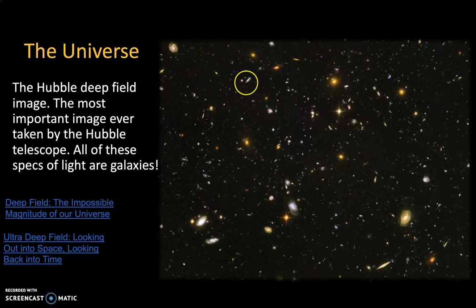Pretty much every single dot, every single speck of light that you see here, I think there's something like 10,000 specks of light here. And the vast, vast majority of those specks and dots of light that you see is an entire galaxy. Thousands upon thousands of galaxies just in our tiny patch of sky that the Hubble Telescope looked at.